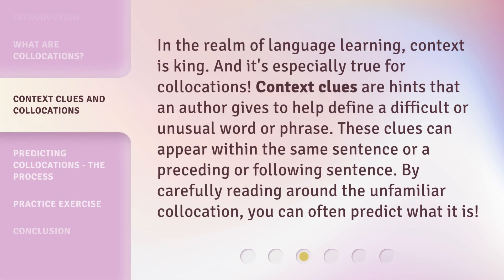In the realm of language learning, context is king, and it's especially true for collocations. Context clues are hints that an author gives to help define a difficult or unusual word or phrase. These clues can appear within the same sentence or a preceding or following sentence. By carefully reading around the unfamiliar collocation, you can often predict what it is.